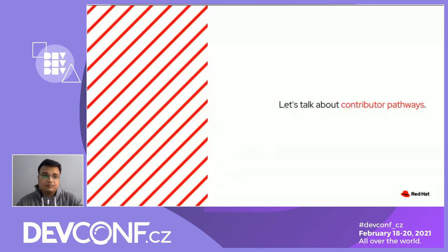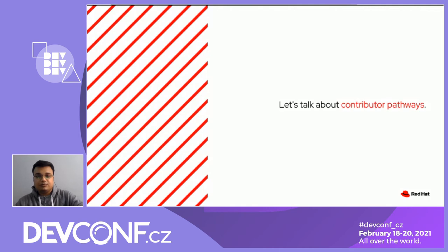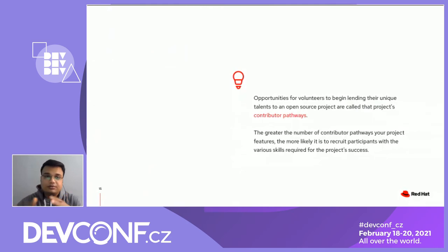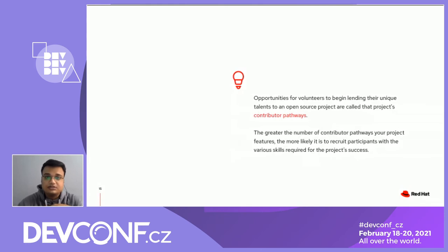Every project and community will need to address these challenges in ways that are most effective for them. In general, we suggest beginning to address them by examining a project's contributor pathways. Opportunities for new volunteers to lend their unique talents to an open source project are called contributor pathways. The greater the number of contributor pathways your project features, the more likely it is to recruit participants with various skills required for project success. When thinking of ways to expand your project, focusing on contributor pathways is a great place to begin.